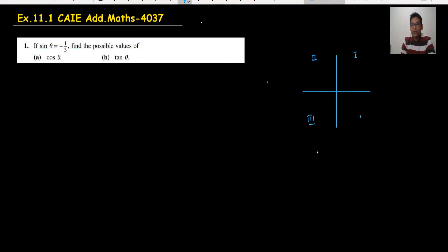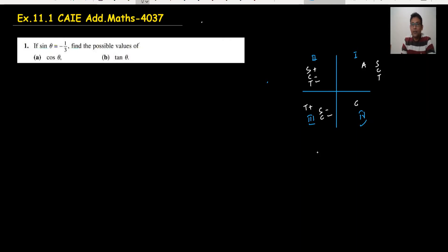We should know the mnemonic: Add Sugar To Coffee — or 'All Science Teachers Are Crazy.' All means sine, cos, tan are all positive in the first quadrant. In the second quadrant, only sine is positive; cos and tan are both negative. In the third quadrant, only tan is positive; sine and cos are both negative. And in the fourth quadrant, cos is positive and sine and tan are both negative.